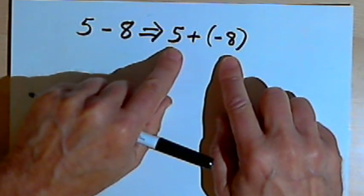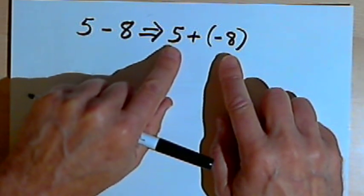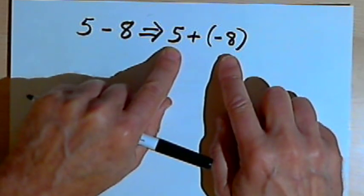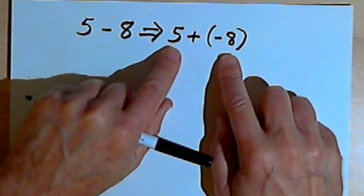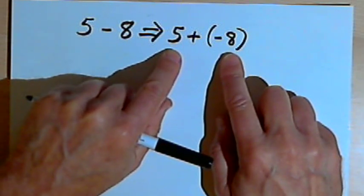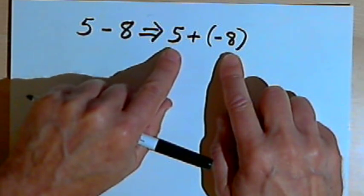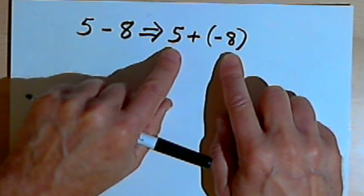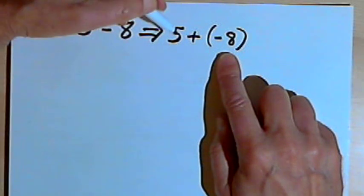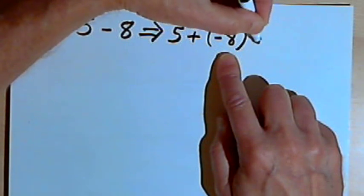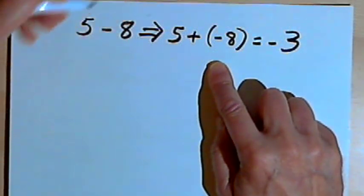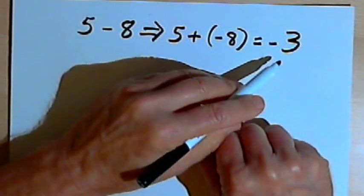I have to add those two numbers together. My basic rule says when the signs are different — I've got one positive and one negative — I find the absolute value of the two numbers, so it's 5 and 8, and I take the difference of those two absolute values. The difference of 5 and 8 is 3. To determine the sign, I use the sign that the bigger of those two numbers had. The bigger number in terms of absolute value was 8, and that had a negative sign. So that means I'm going to have negative 3. So 5 minus 8 is negative 3.